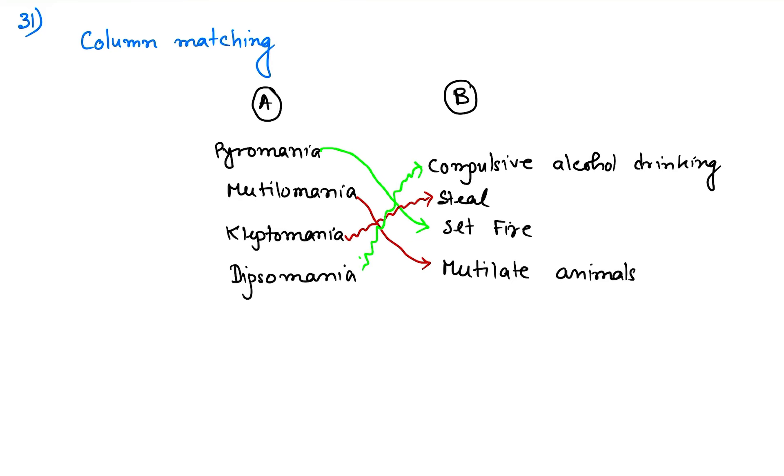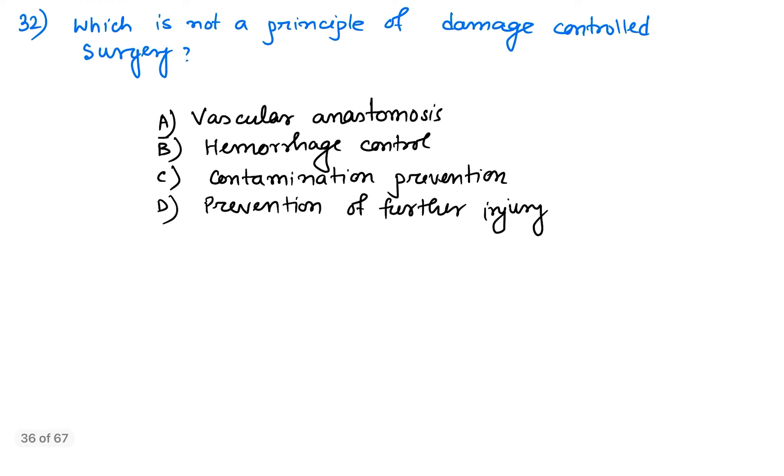Next, coming to question number 32: which is not a principle of damage control surgery? Hemorrhage control is one of the principles, contamination prevention is one of the principles, prevention of further injury is another principle. The answer will be vascular anastomosis - vascular anastomosis is not a principle of damage control surgery.